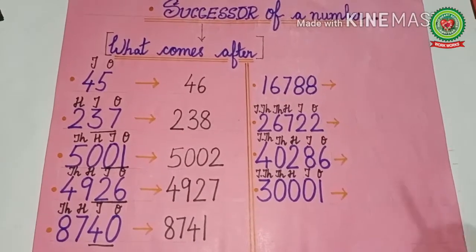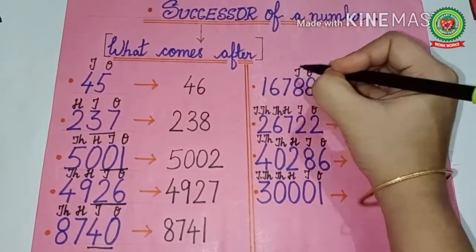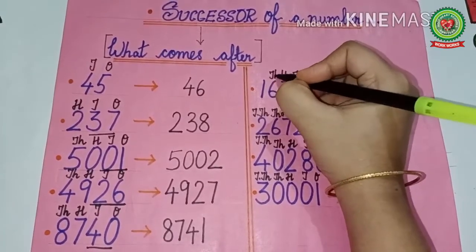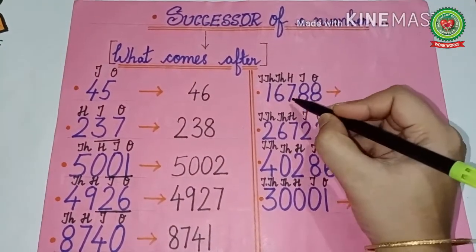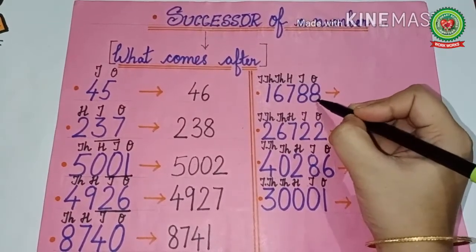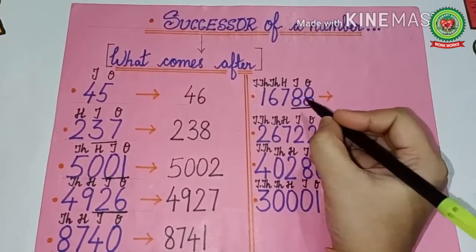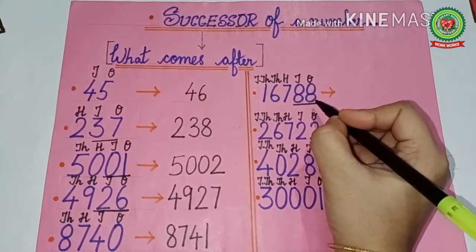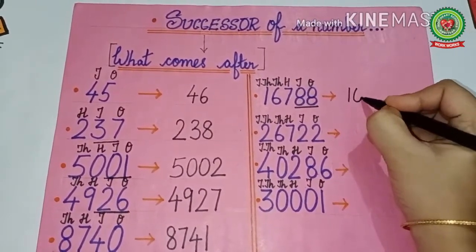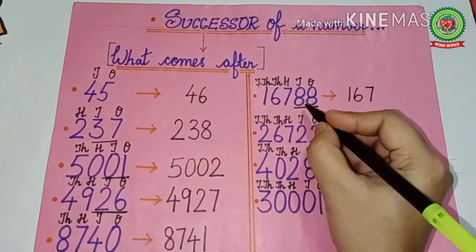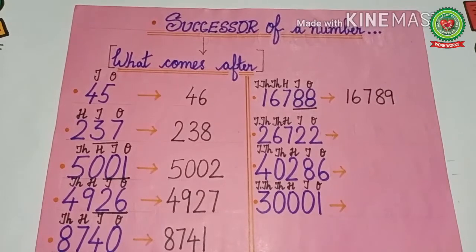Now kids, we have moved on to five-digit numbers. Write the place value table — ones, tens, hundreds, thousands, and ten-thousands. Read the number: 16788. The same rule applies — ones and tens together, so we look at 88. What comes after 88? That is 89. So sixteen thousand seven hundred remains the same, and 88 becomes 89. The successor of 16788 is 16789.